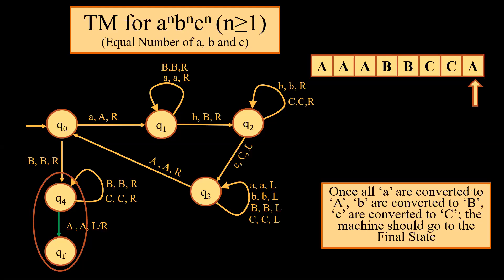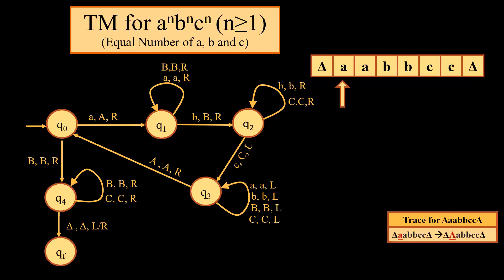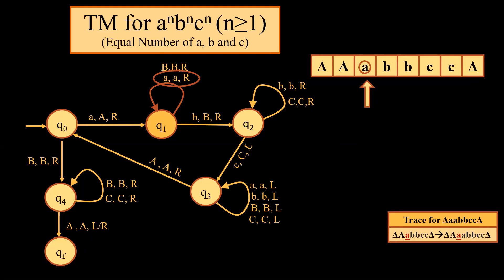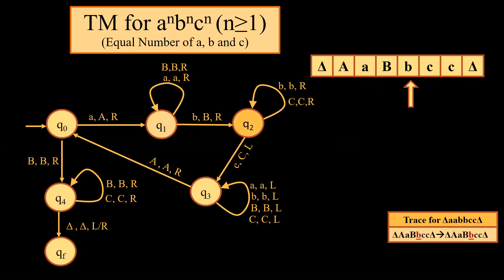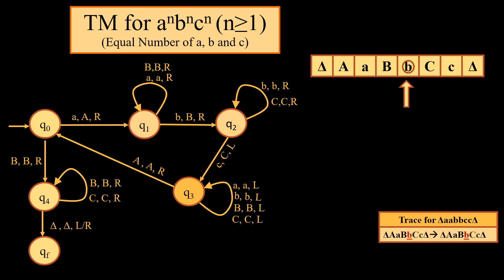Now we start with the actual trace. We have A2, B2, C2 on the tape. At Q0, the first element read is small A; it is converted into capital A. We move ahead and come across the second small A — no change, self-loop on Q1, move to the next symbol. We find small B, convert it into capital B, and move right. We come across another small B — no change, still searching for the first C. Since we have already converted first A into capital A and first B into capital B, when we come across first C we convert it into capital C. At this point, A1, B1, C1 have been traversed.